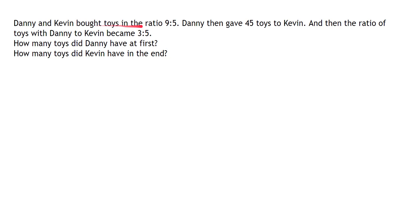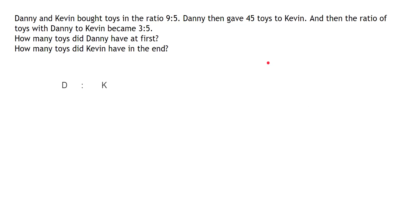Initially Danny and Kevin bought some toys in this ratio, then Danny gave 45 toys to Kevin and the ratio changed. What we need to look for is what remains unchanged so that we can establish some relationship. Danny gave 45 toys to Kevin, but the total number of toys with Danny and Kevin — did it change before and after the exchange? No, it did not. So that's our basis here.